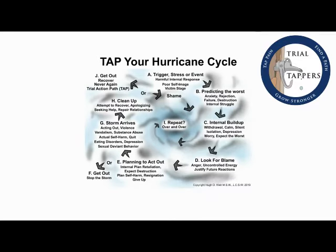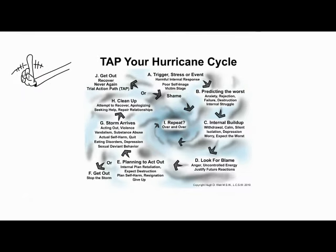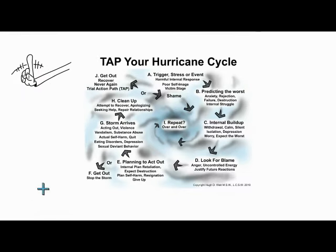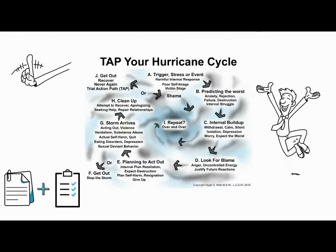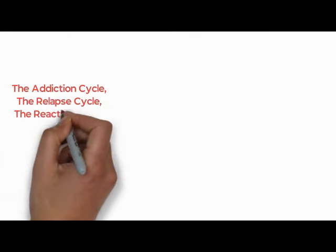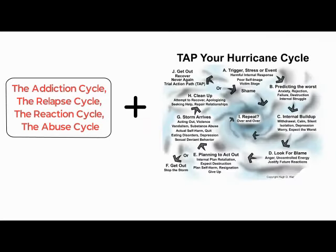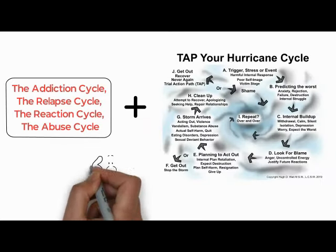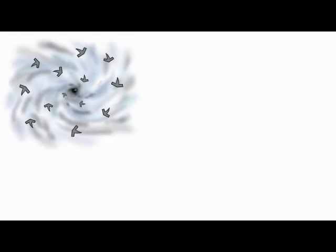I will outline all of the steps of this visual story I call the hurricane cycle. I did not create most of the steps outlined in the cycle — it is a combination and adaptation of several similar cycles that therapists use to help people overcome destructive behaviors. Other versions of this cycle include the addiction cycle, the relapse cycle, the reaction cycle, the abuse cycle, etc. I have found that tying this cycle to the hurricane illustration makes this complex and difficult concept easier to remember.